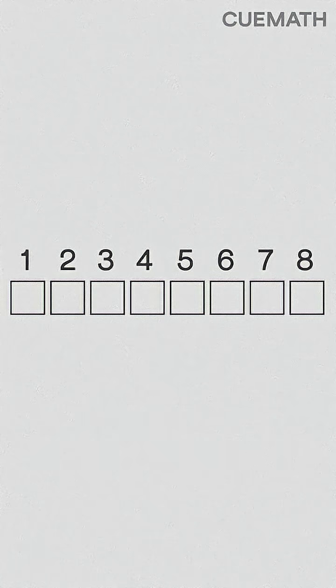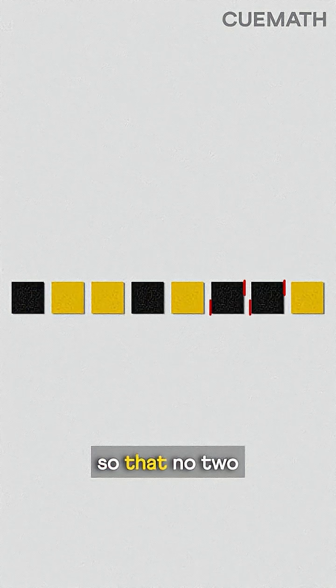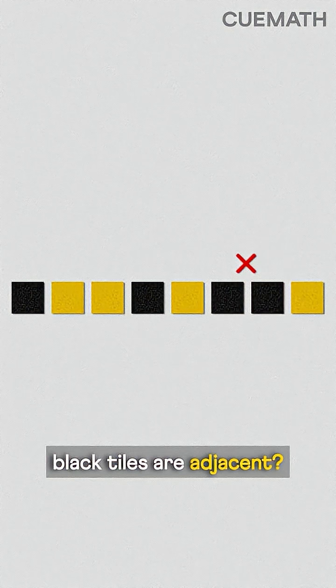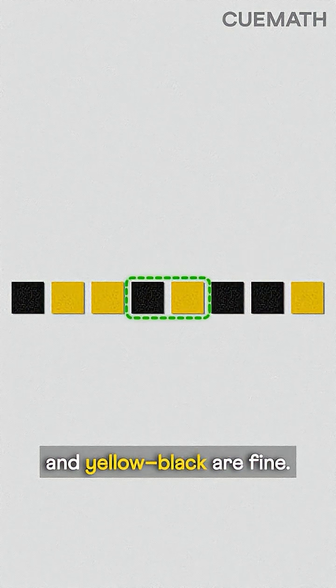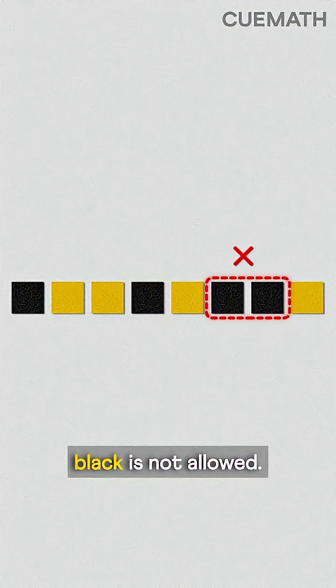How many ways can you paint 8 tiles, using yellow and black, so that no two black tiles are adjacent? Yellow yellow and yellow black are fine, but black black is not allowed.